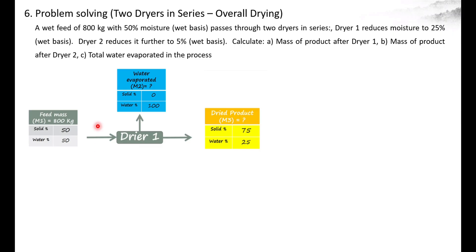For Dryer 1: the feed quantity is 800 kg, so M1 is 800 kg. The feed has 50% moisture, so the water percentage in the feed is 50 and the remaining 50% is solid. M2 (water evaporated) is unknown, but the solid percentage in the evaporated stream is 0 and water percentage is 100%. The dryer 1 reduces moisture so the water content in the product from the first dryer is 25%, meaning 75% is solid.